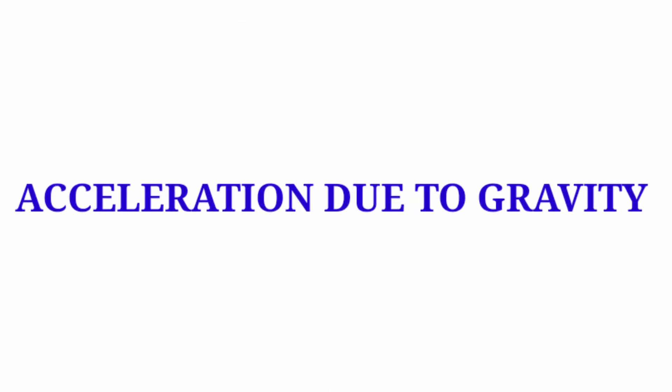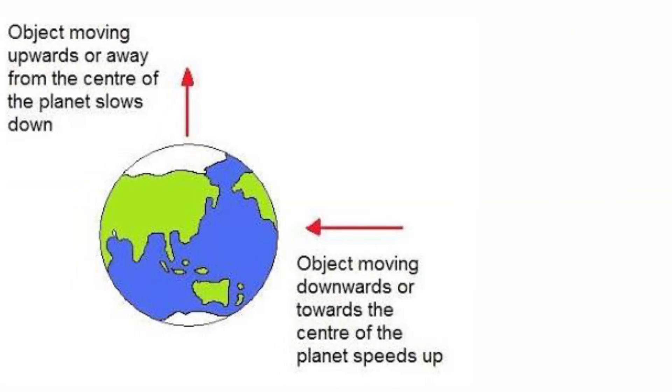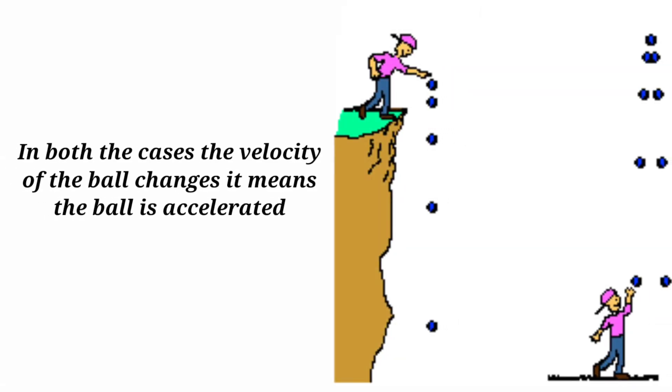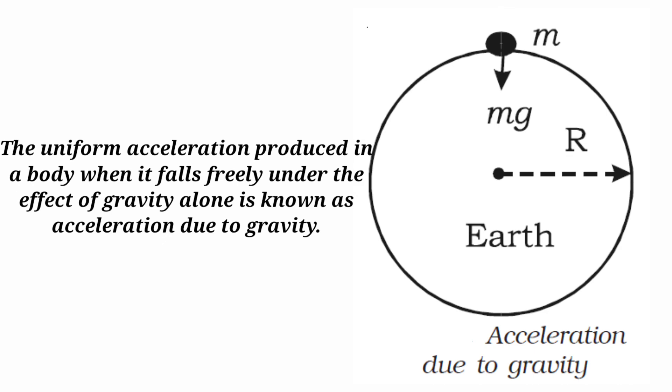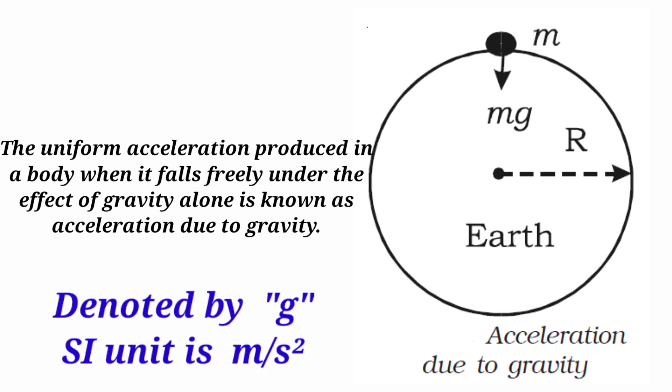Now let's discuss acceleration due to gravity. If we throw a ball upwards, its speed decreases till it reaches the highest point. And if we drop a ball from a height, its speed increases. In both cases, the velocity of the ball changes, which means the ball is accelerated. Whenever an object moves near the surface of the earth with no other force acting on it, it is accelerated. And this acceleration is due to the earth's gravitational force, so it is known as acceleration due to gravity, denoted by g, with SI unit meter per second square.